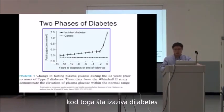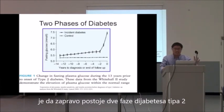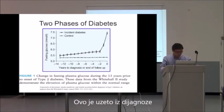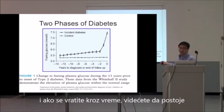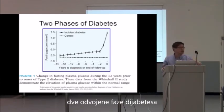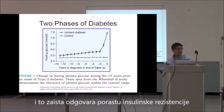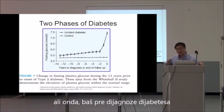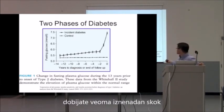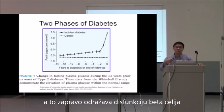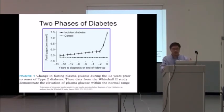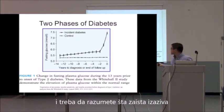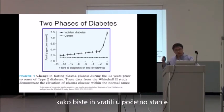What you have to understand is that there are actually two phases of type 2 diabetes. Looking back from the time of diagnosis, there's a slow rise in blood sugars corresponding to increasing insulin resistance, and then just before diagnosis, a very sudden spike reflecting beta cell dysfunction — where the pancreas can't produce quite enough insulin. Understanding both phases is essential to reversing the disease.